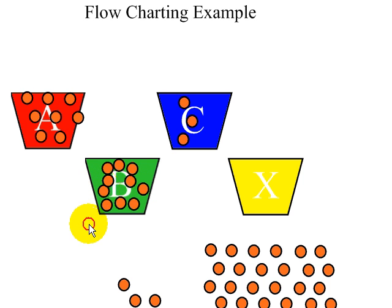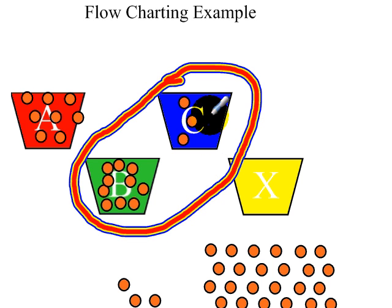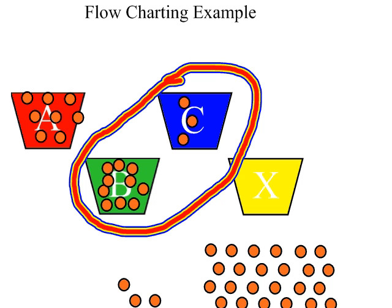Now I'm going to go back to my flowchart, and the next thing it says is B greater than C. I'm comparing those two. B definitely has more in it than C, so that's yes — I go to the right again. Following the flowchart down, it says A equals B minus C.